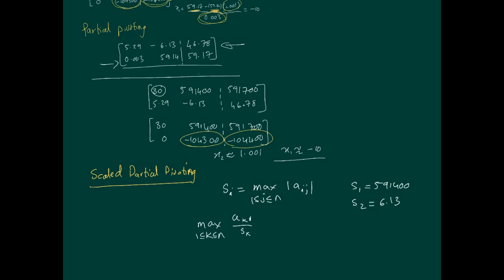Now that we've got the scaling factors, we're going to go down along this column and divide by the scaling factors. We divide 30 by s1, so 30 divided by 59,140 - that's going to be a tiny number. Then we have 5.29 divided by 6.13. So you have two numbers: 30 divided by 59,140 and 5.29 divided by 6.13. Obviously this is the bigger of the two.